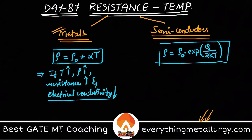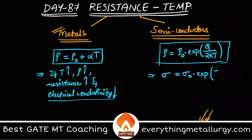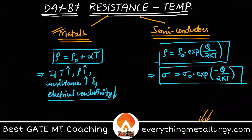From the resistivity equation we can easily write the equation for electrical conductivity. We know electrical conductivity σ is the reciprocal of resistivity, so: σ = σ₀ · exp(−Q / 2kT).